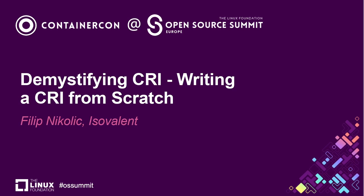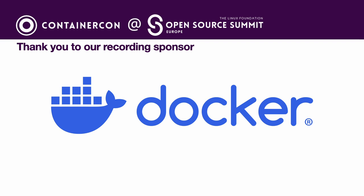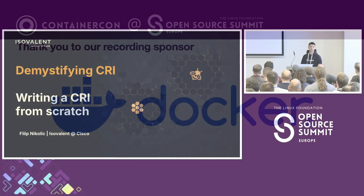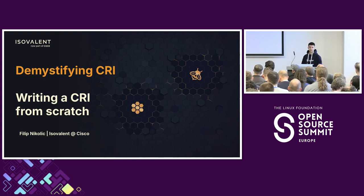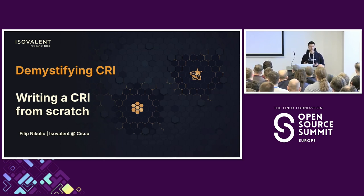Welcome to the first day of the Open Source Summit in Vienna. We're pretty much at the end of the day now. I hope you had some fantastic talks so far. My name is Filip Nikolic. I'm working at iSurveillant, the creators of Cilium and eBPF, which is now part of Cisco. Today I want to demystify CRI in this talk, and we're going to do this by actually writing a CRI from scratch.